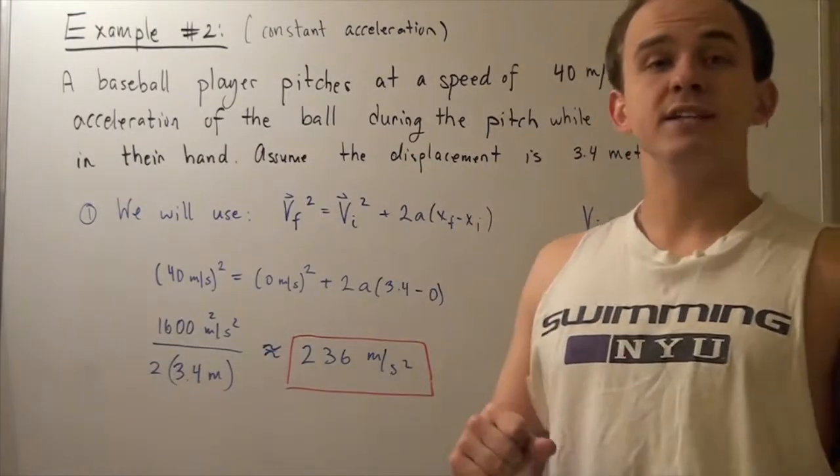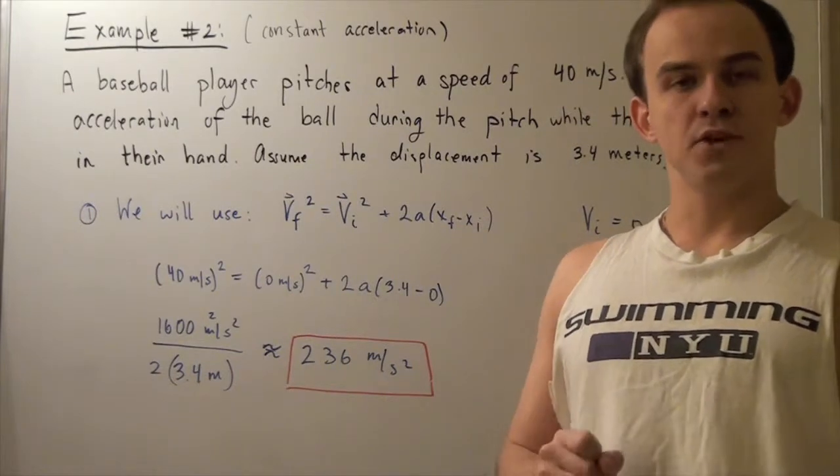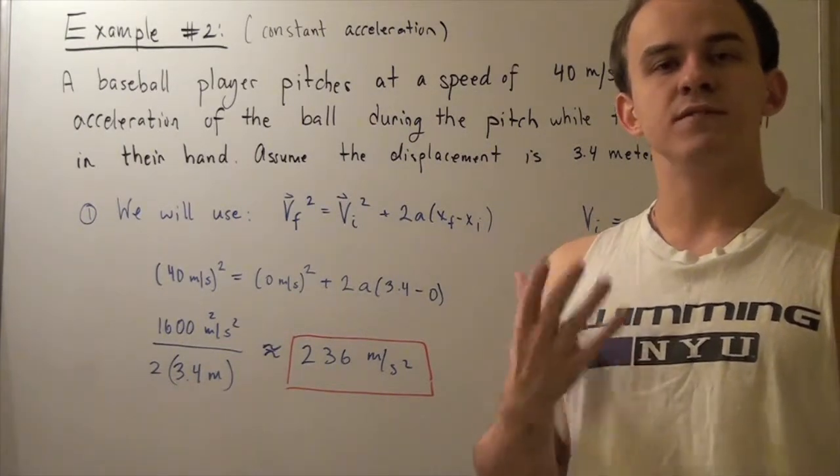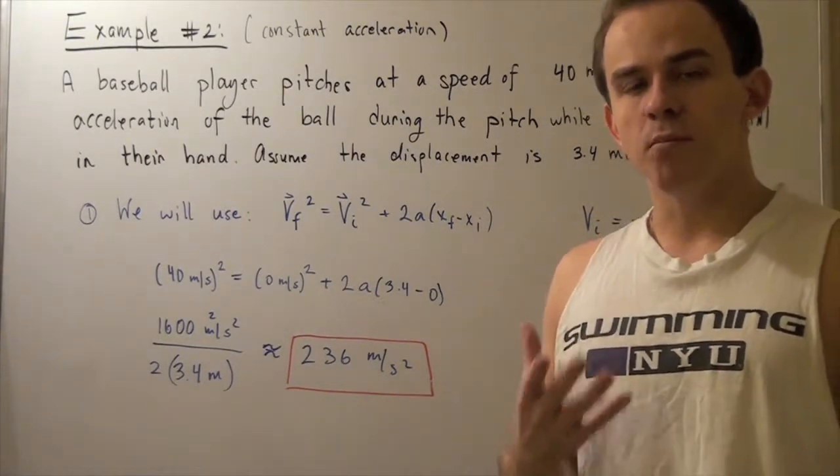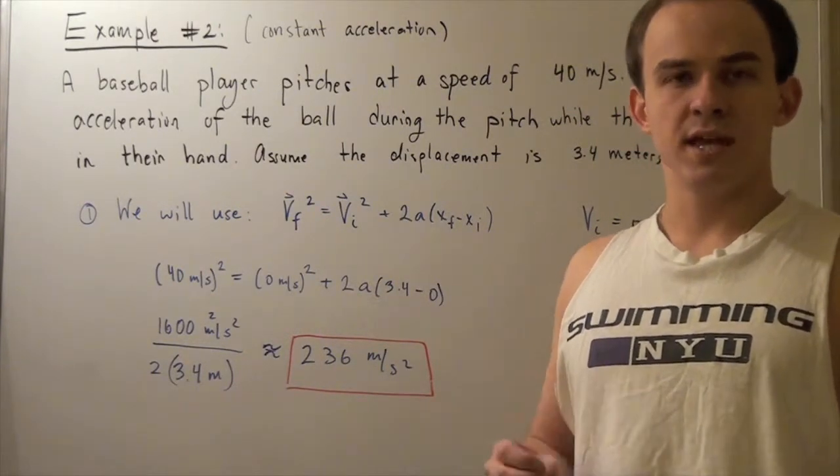Let's look at the following example. A baseball player pitches with a speed of 40 meters per second. We want to find the acceleration of the ball during the pitch while the ball is still in the person's hand.